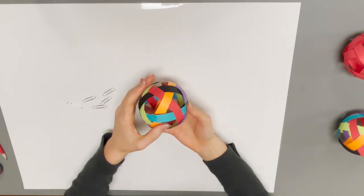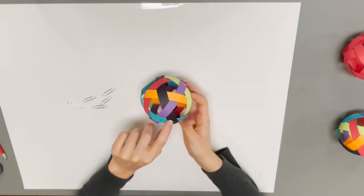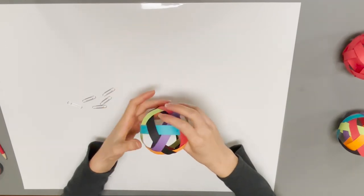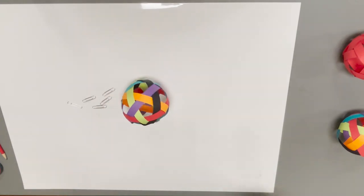And then you can do one last check to make sure everything goes under, over, under, over, under, over all the way around. And there you have it. Your woven paper ball.